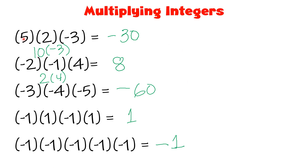Again, review: just count the negative signs to know the sign of your product. In the first example, we have 1 negative sign — 1 is odd — so we got a negative answer. In the second, we have 2 negative signs — 2 is even — so the answer is positive. Third example: 3 negative signs — odd — giving a negative answer. Fourth: 2 negative signs — even — giving a positive answer. And for the last one, 5 negative signs — 5 is odd — so the answer is also negative.